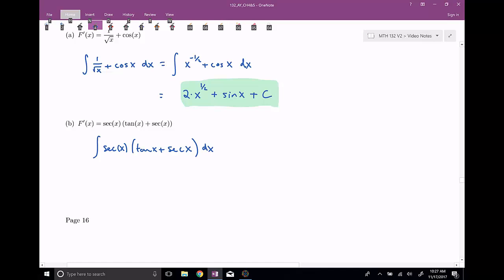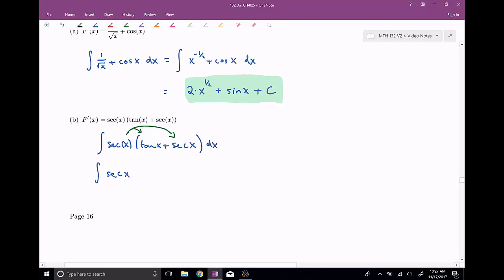I just went ahead and wrote down our indefinite integral here. Now, the big thing is that we have to remember that there is no product rule, or there is no quotient rule, for anti-derivatives. So whenever you come across something like this, our strategy is we have to get rid of the product of these functions, so I'm gonna go ahead and distribute. That's good because I didn't know what the anti-derivative of secant was anyway. So I get secant x tangent x plus secant squared x.